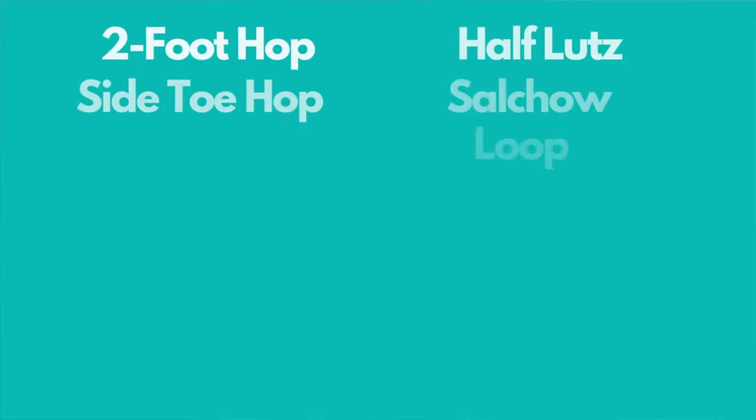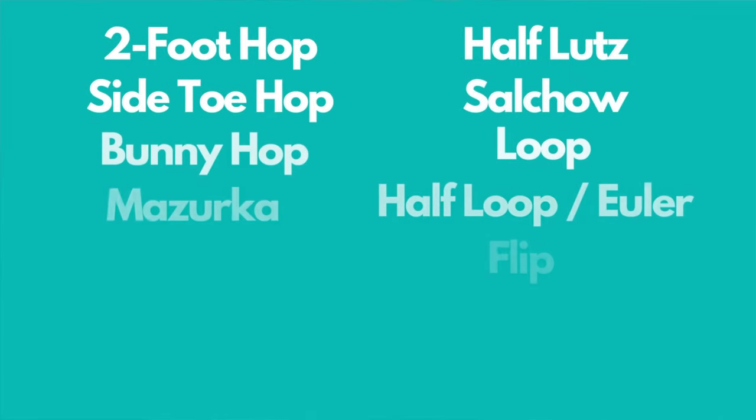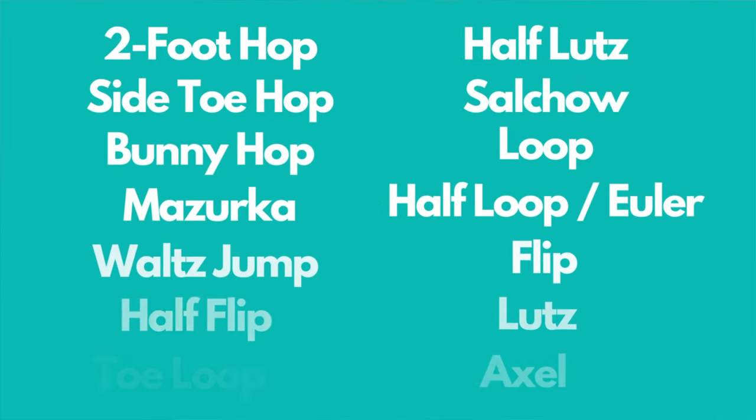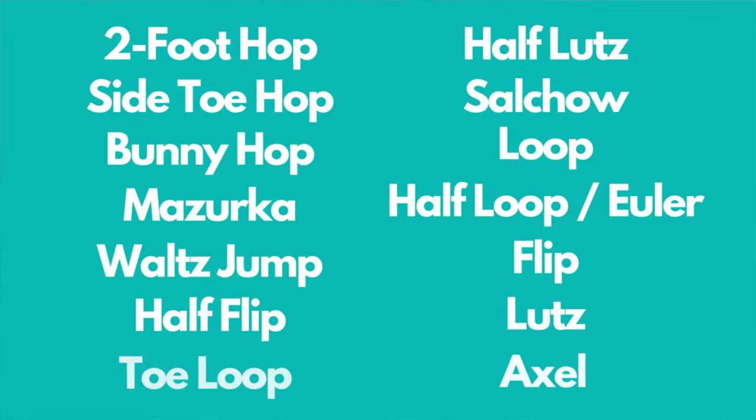All jumps look pretty much the same when you're in the air, whether it's a Double, Triple, or a Quad. In those cases, it's just the speed of rotations that is different. Skaters learn jumps in a developmental sequence, beginning with the easiest and gradually increasing in difficulty, depending upon their ability and dedication.